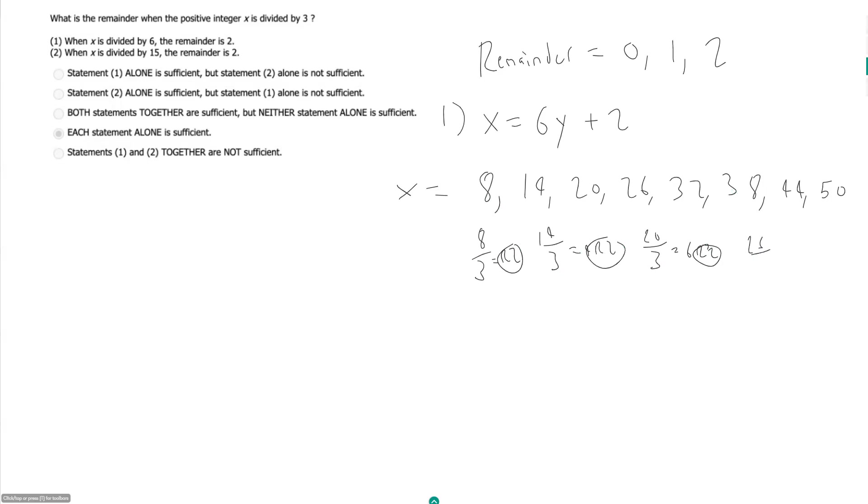Should I keep going? 26 divided by 3 is 8, again remainder 2. So I think that's enough for me to say this is sufficient to say the remainder is equal to 2.